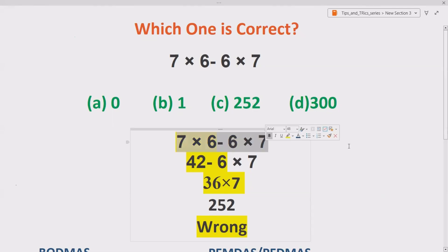We are given 7 × 6 - 6 × 7. If you don't know the basic rule to solve any arithmetic expression in mathematics, you might come up with the wrong answer. When you solve it normally, what you do: 7 × 6 gives you 42, then you do 42 - 6 gives you 36, then 36 × 7 gives you 252. But this is wrong.